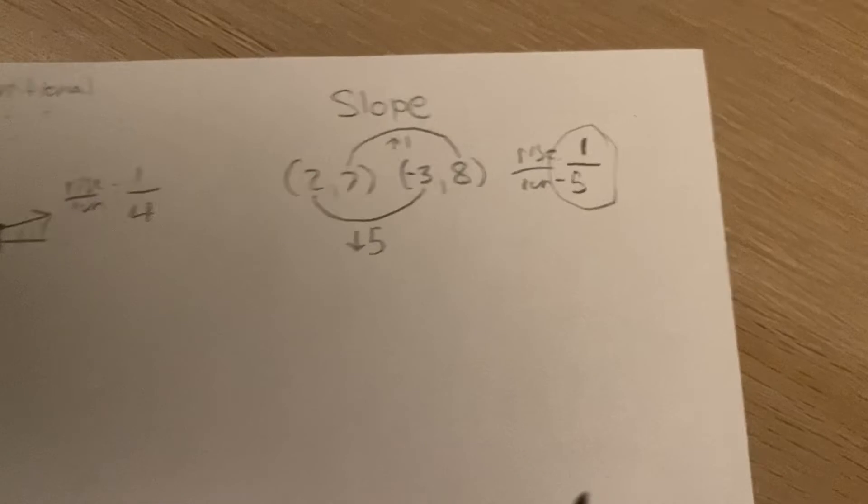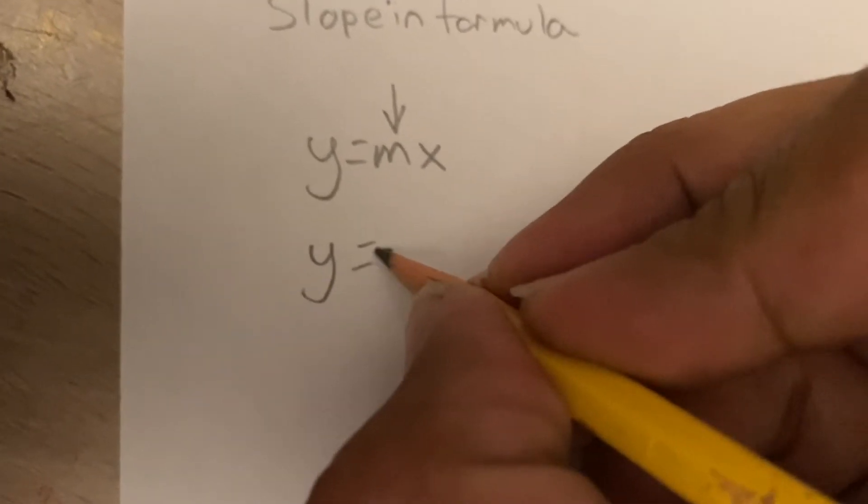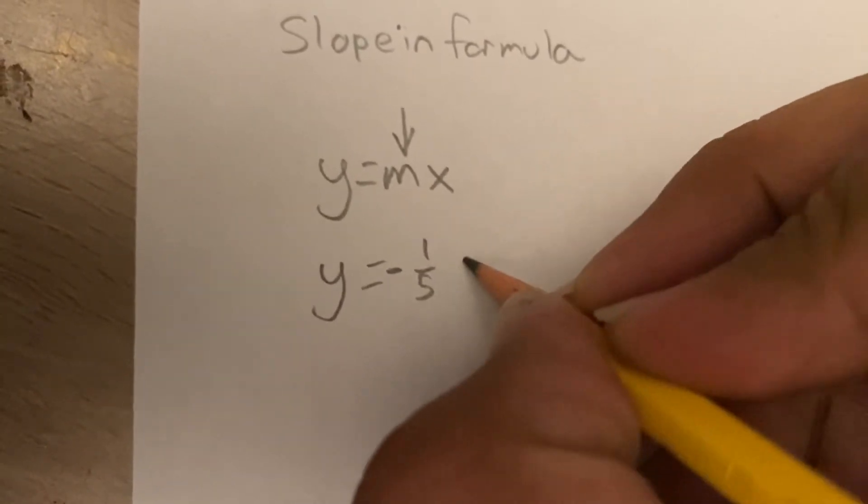So our slope was negative 1 over 5. So to write this formula correctly, it would be y equals negative 1 over 5 x.